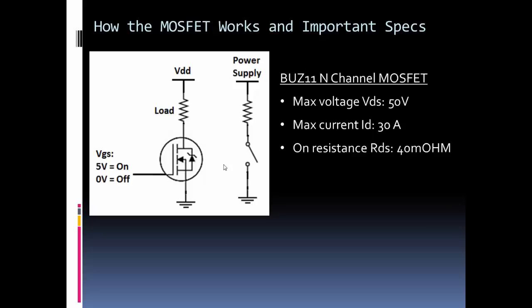40 milliohms is the value for the MOSFET, and that's pretty low. We can essentially, in most circuits, just pretend it's a short.